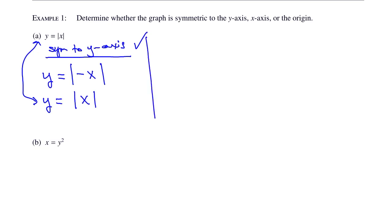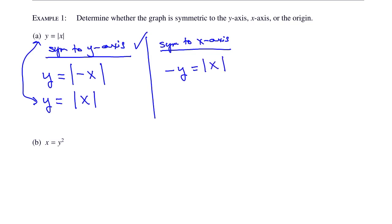What about symmetry to the x-axis? Write the equation but replace y with negative y. The question is: is negative y equal to the absolute value of x? Solving for y just forces the negative to the other side. This negative is outside of the absolute value, so this is not the same as the original equation. It is not symmetric over the x-axis.